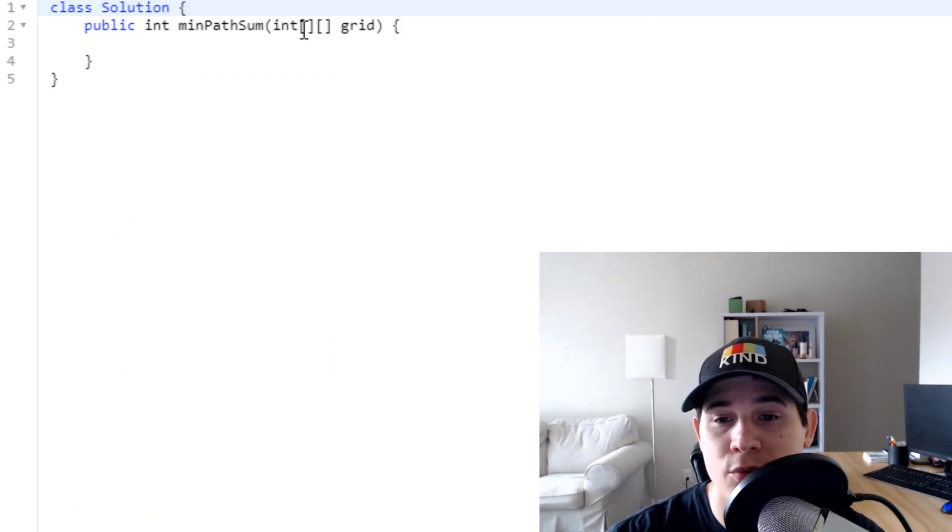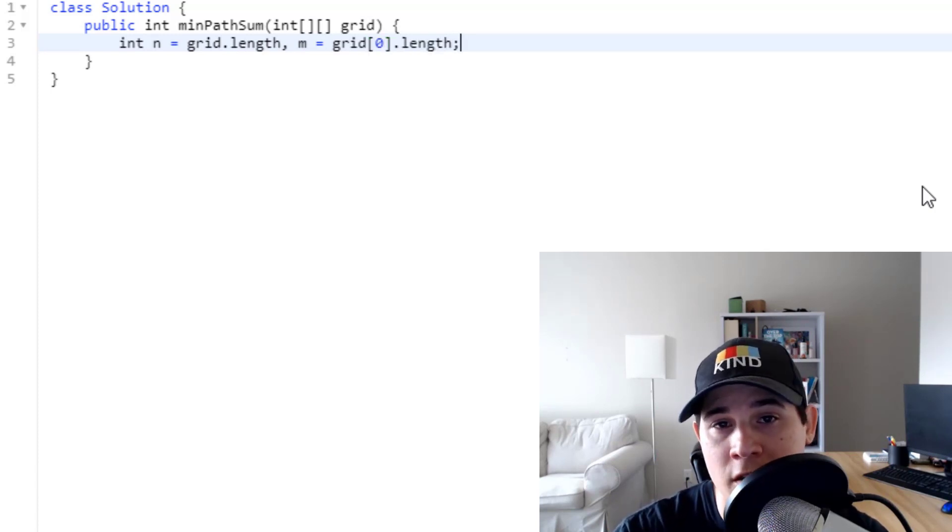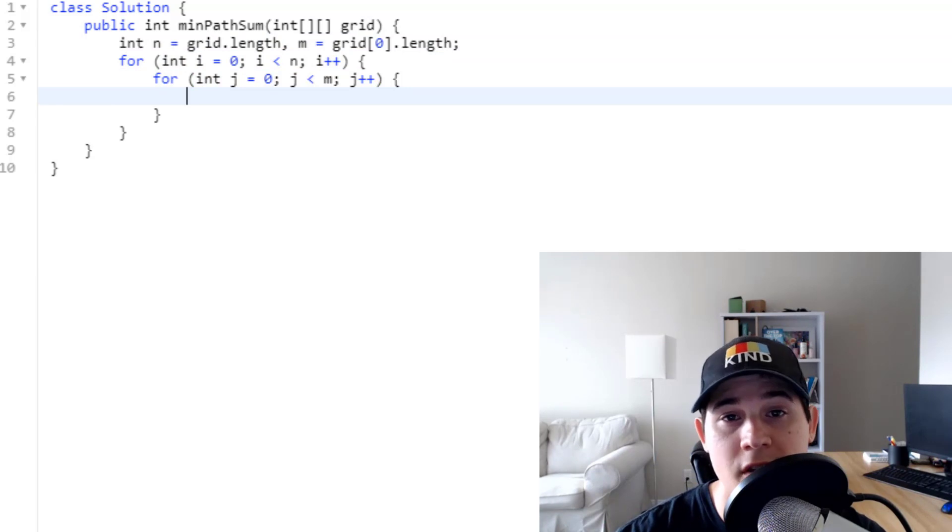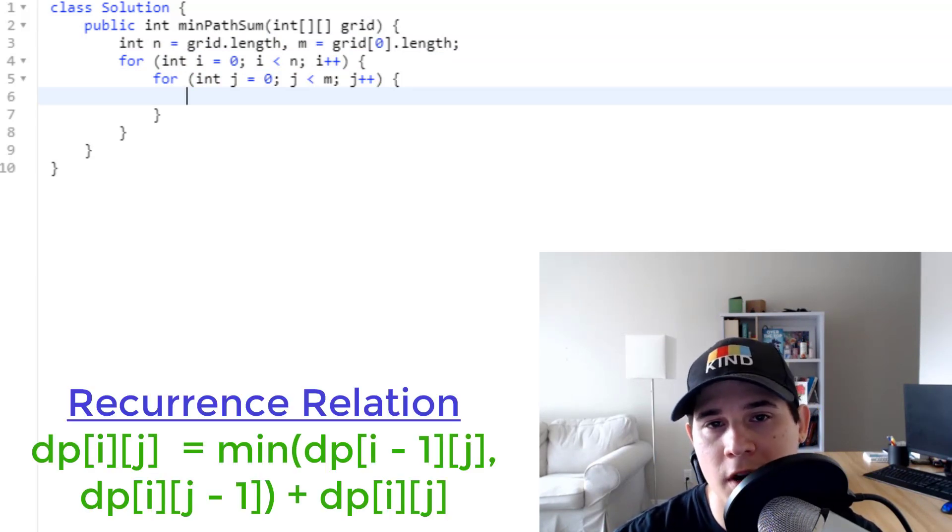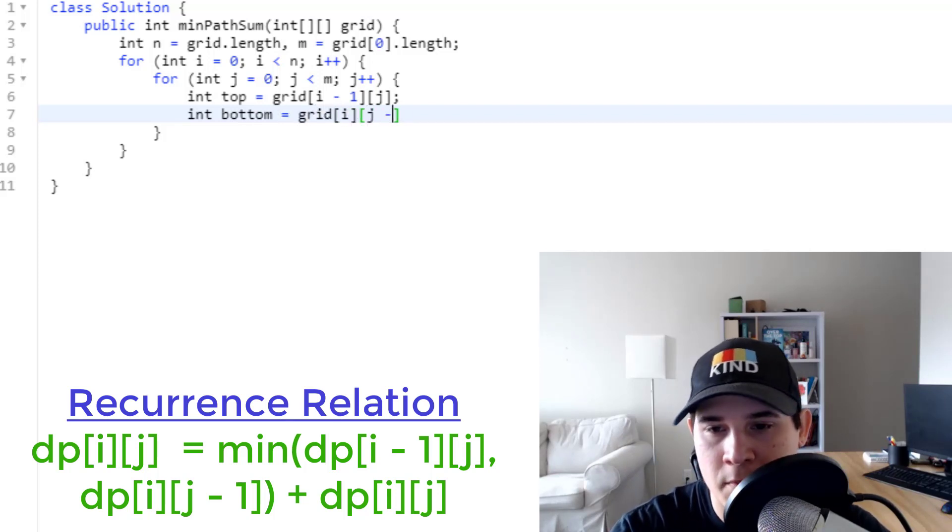All right, so we're given a 2D integer array called a grid, and we need to return an integer, the minimum path sum. So first, let's just grab the rows and columns from our grid to make our lives easier. So we can say n is grid.length, and m is grid at position 0.length. And then we're going to loop over all of the elements in our grid. And then what we want to do is apply this recurrence relation that we came up with. We're going to look above us and to the left of us. So we could say int top is going to be at position grid of i minus 1 of j. And then bottom is going to be at position grid of i, j minus 1.